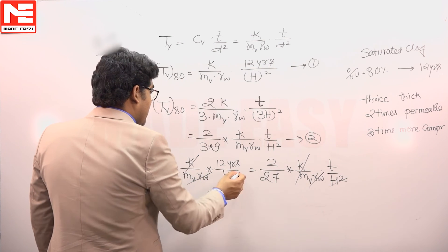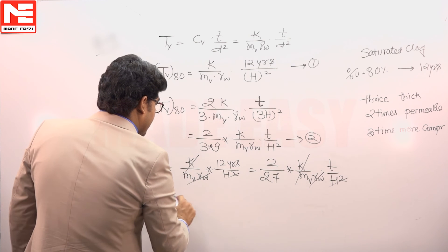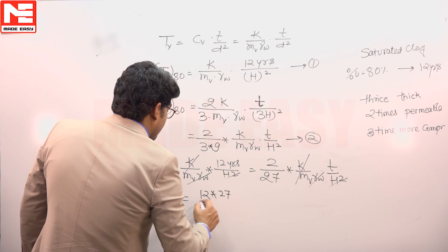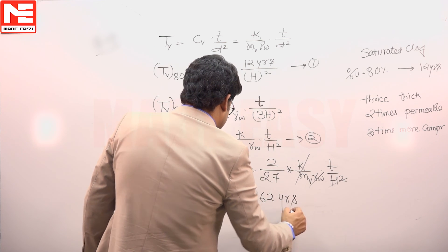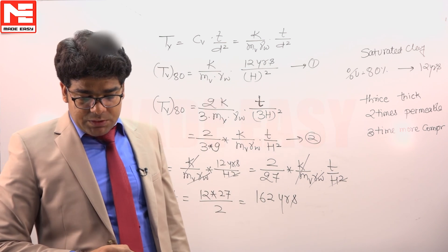By this relation, this will be cancelled out, and we can say T is equivalent to 12 into 27 divided by 2 years, and that is 162 years. So the final answer is 162 years.